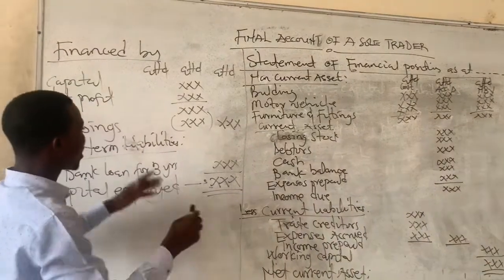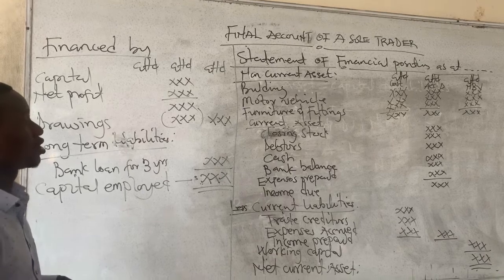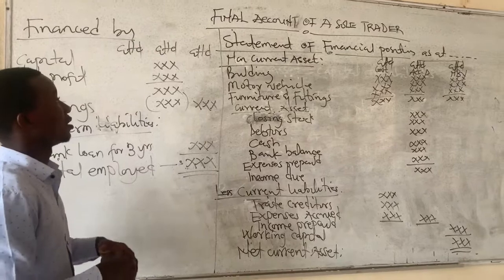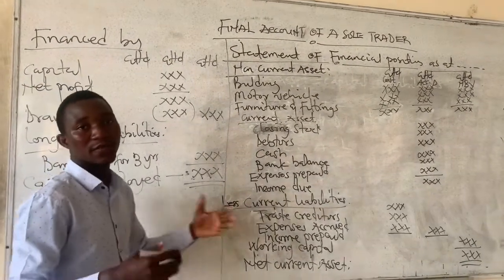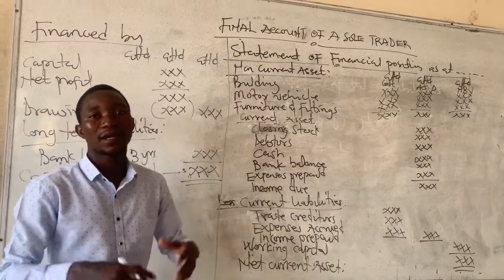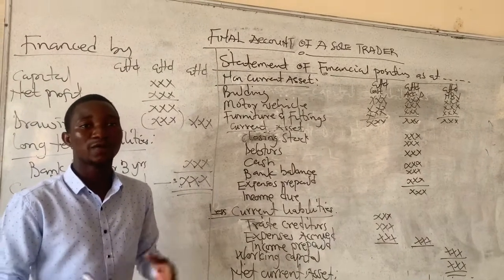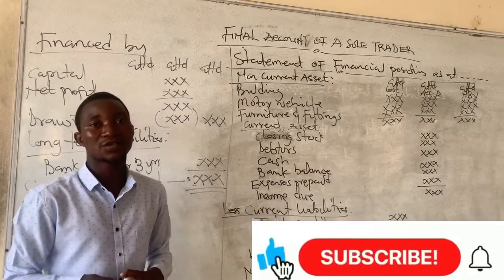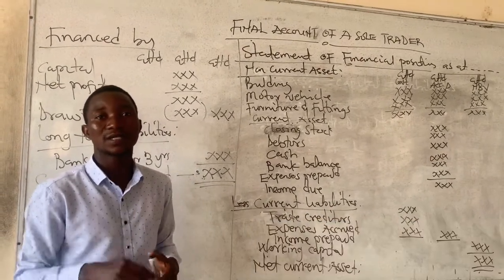This is how the format of the statement of financial position looks. You can also use the other two approaches to balance your statement of financial position. We will end our lesson here. In our next video, we will take a full practical question preparing both the income statement and the statement of financial position with adjustments. Don't forget to subscribe to my channel so that anytime I load a video, you get a notification on your devices. Bye for now.